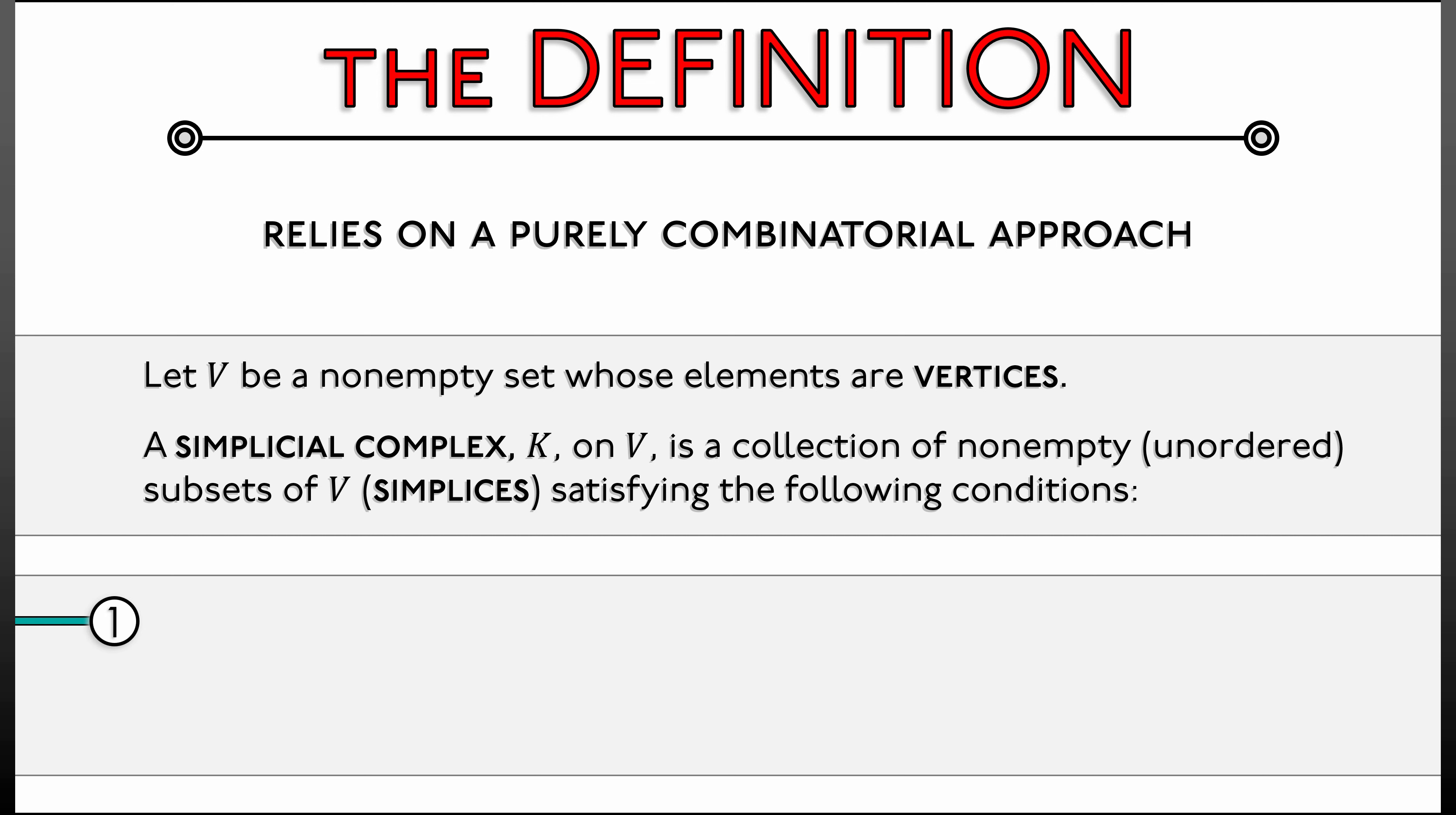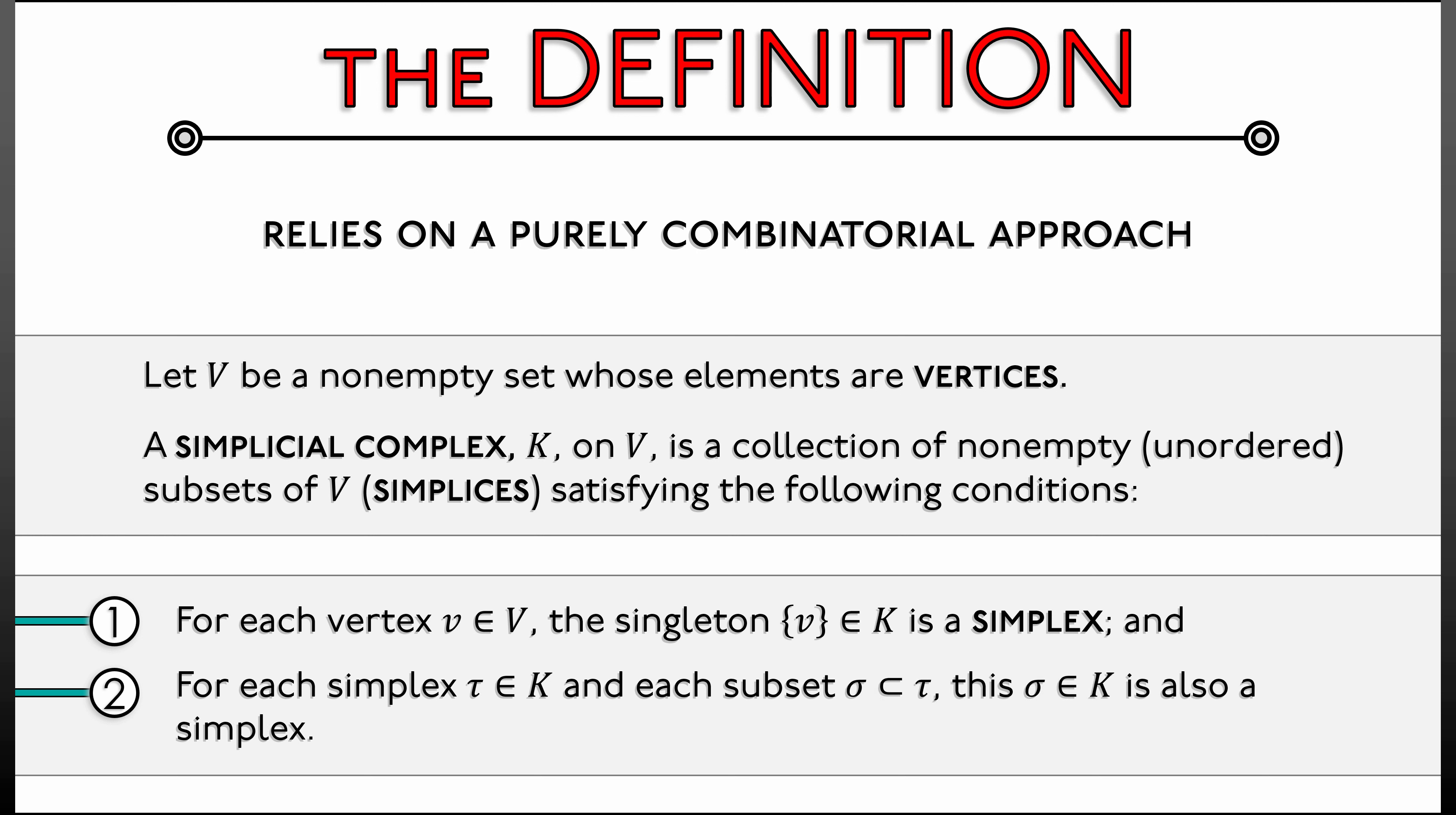One, for each vertex v in V, the singleton {v} is a simplex. That is, this complex contains all vertices in the ground set. Two, for each simplex tau in our complex K and each subset sigma of tau, this sigma is also a simplex in the complex K. That's it. That's the definition.